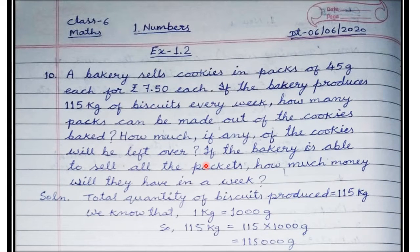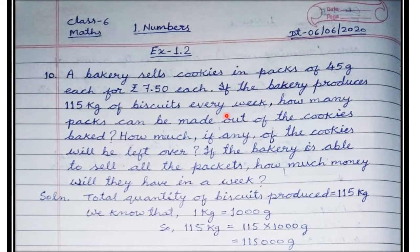Okay students of class 6, once again chapter number 1 - Numbers. We'll deal with exercise 1.2, question number 10. A bakery sells cookies in packs of 45 grams each for 7 rupees 50 paise. If the bakery produces 115 kg of biscuits every week, how many packs can be made? How much of the cookies will be left over? If the bakery is able to sell all the packets, how much money will they have in a week?